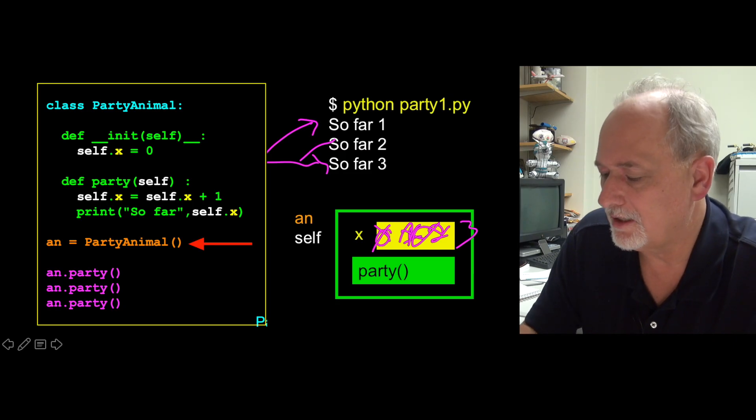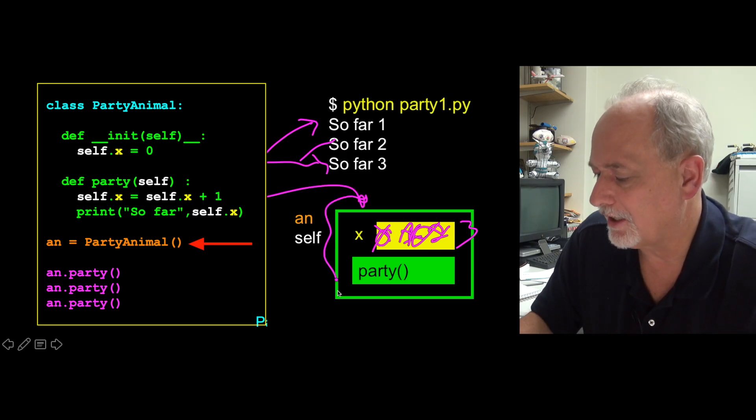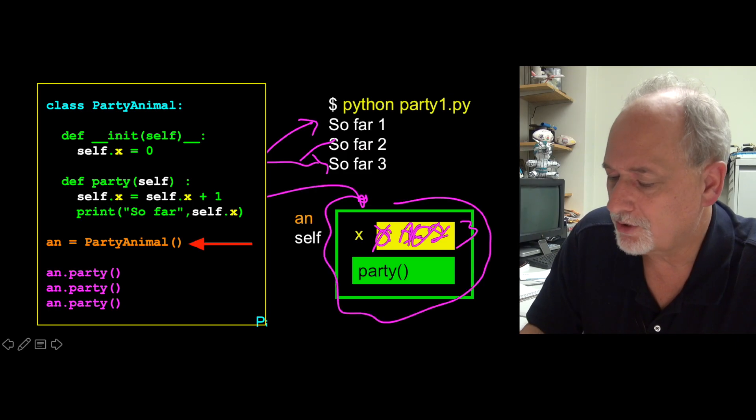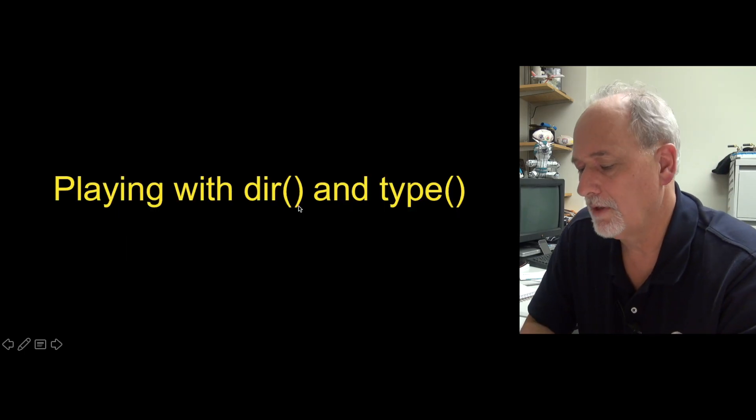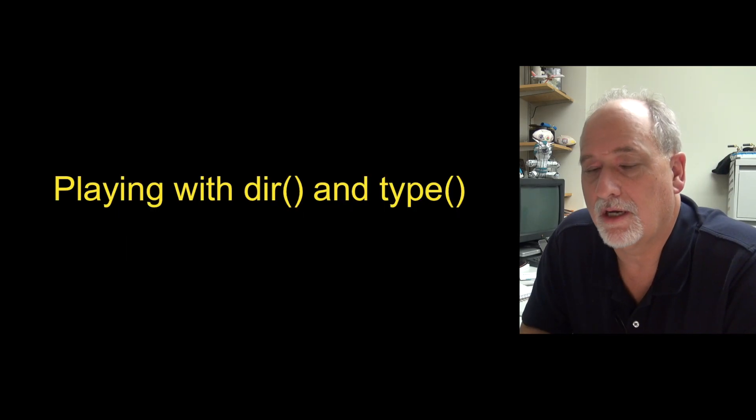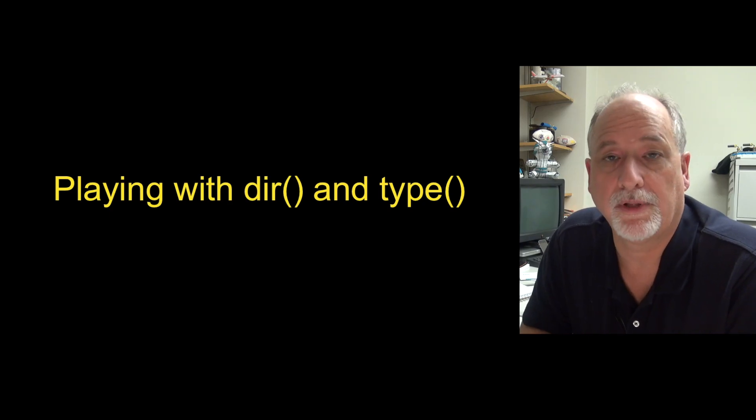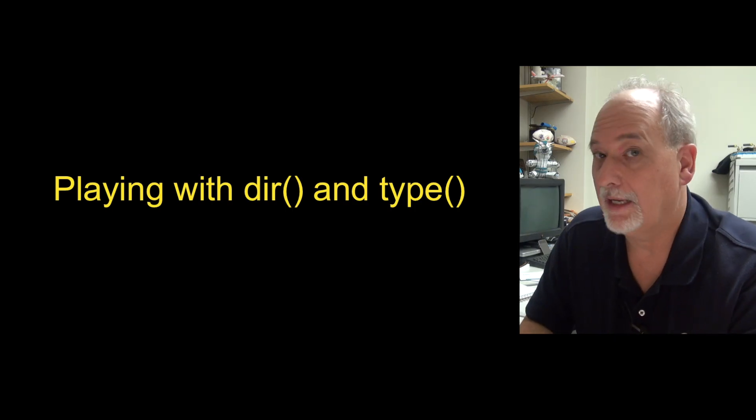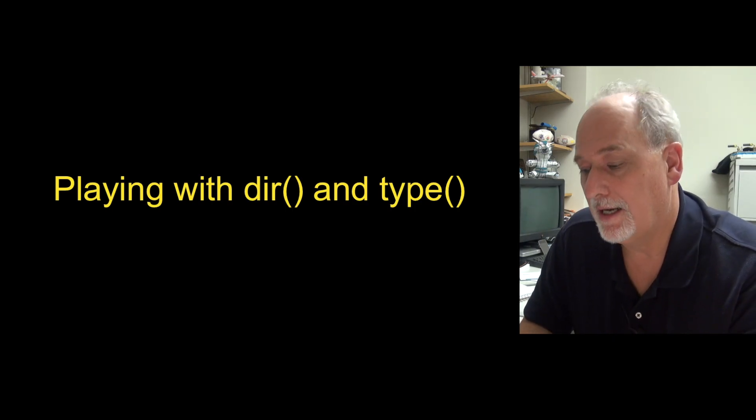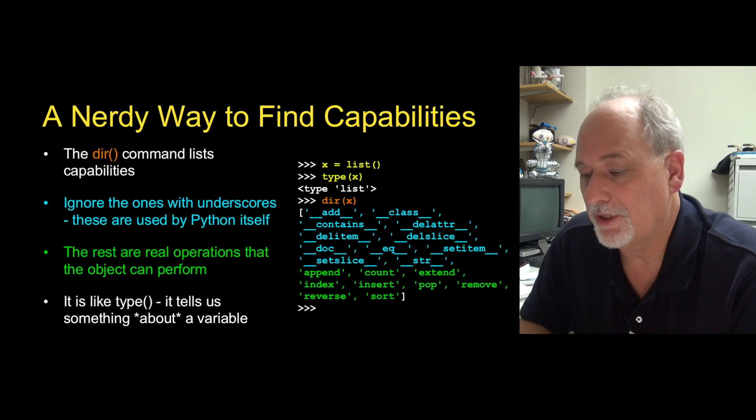And so you can think of this as constructing the object and then associating it with this an variable. Now, we've created this object. We can play around with things we've played around before with dir and type. We use dir and type to kind of inspect variables and types and objects. So we've been using objects all along.